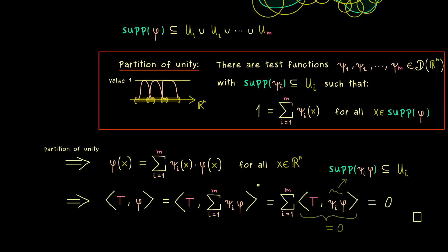And this was exactly the only point missing in our proof, so we are done. The result is that the support of every distribution is well defined. As mentioned at the beginning, this fact will be used to extend the definition of the convolution — but that is the topic for the next video. I hope to see you there. Have a nice day. Bye bye.